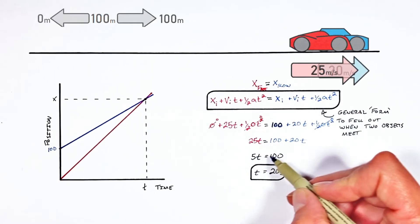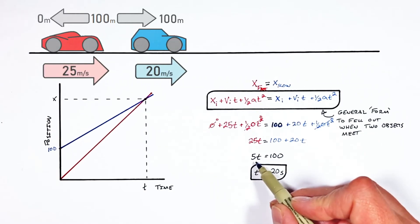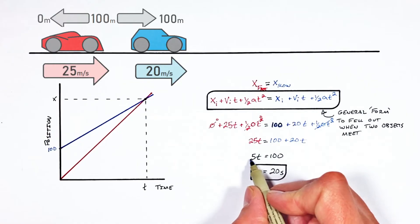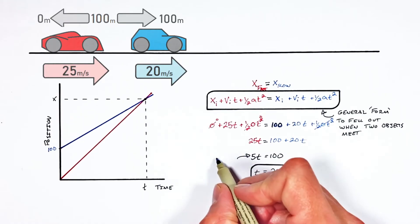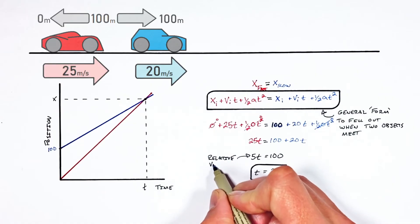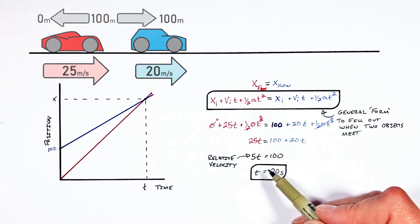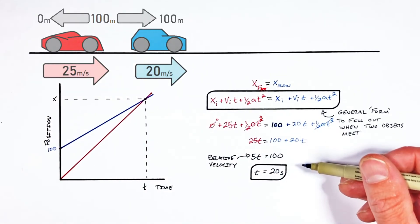Now I actually want to back up just a step here to this line of math right here. It looks as though it's just math. But there's actually something really important hiding out right here with this 5t. Or more importantly with the 5. You see this 5 is what we call the relative velocity between the fast and slow cars. Or really you could just say it's how much faster the fast car is going compared to the slow car.